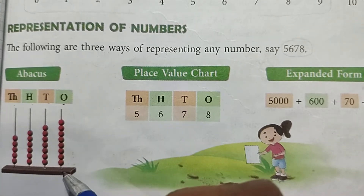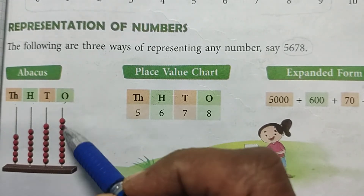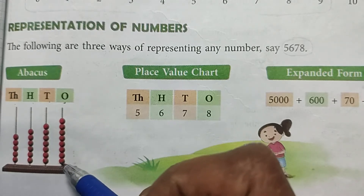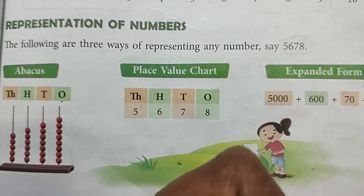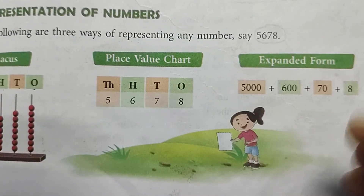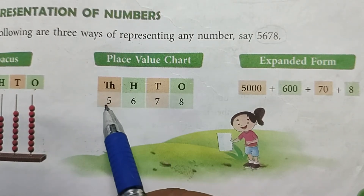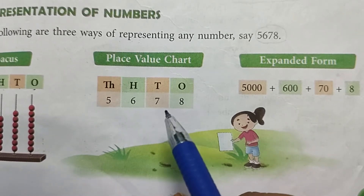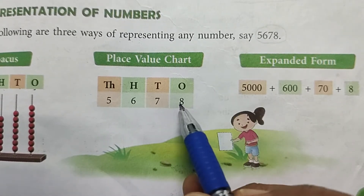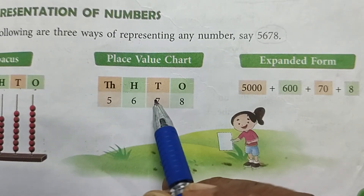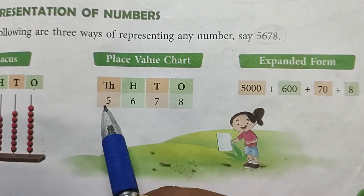हर place के लिए particular string होती है — जैसे ones के लिए particular string है, जितने number show करने हों उतने beads उस string में दिखाते हैं। Place value chart में ones, tens, hundreds और thousands की place होती है — दिए गए number में जो ones की place पर होगा उसे ones के column में, tens की place पर होगा उसे tens में, hundreds और thousands की place पर होगा उसे उसी column में लिखते हैं।